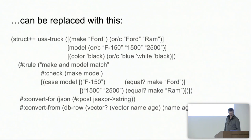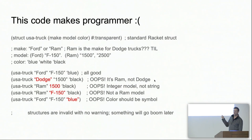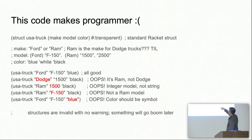This code will make the programmer sad. In base Racket we declare USA struct with make, model, and color. We have some documentation saying what the field values must be and what the internal relationships must be. The first example is fine.